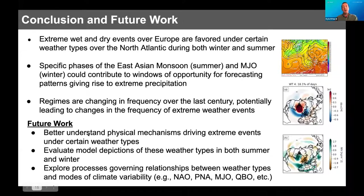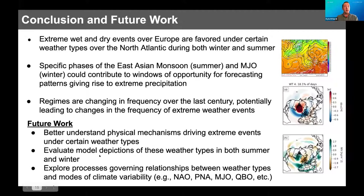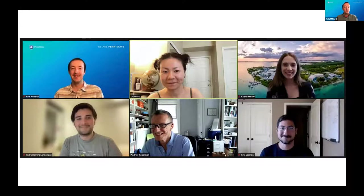Our conclusions: the main goal was to connect extreme wet and dry events over Europe to certain weather types over the North Atlantic. We showed that extreme precipitation events are favored under certain North Atlantic weather types, and that specific phases of the East Asian Monsoon in summer and the MJO in winter could contribute to windows of opportunity for forecasting. Regimes are also changing in frequency over time. For future work, we're interested in understanding the physical mechanisms driving extreme events, evaluating model depictions of these weather types, looking at atmospheric rivers under certain weather types, and exploring relationships between weather types and modes of climate variability including NAO, MJO, PNA, QBO, and ENSO. Thanks to Andy Robertson and Angel Munoz for their guidance.